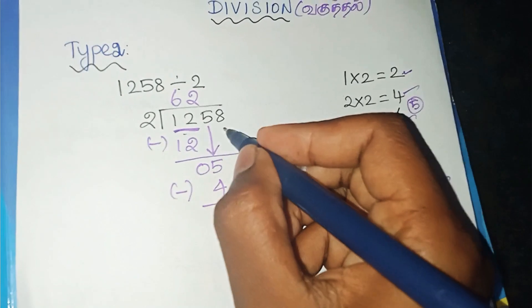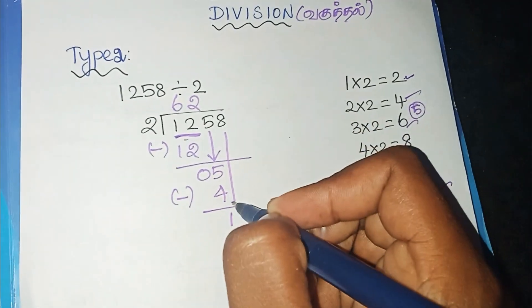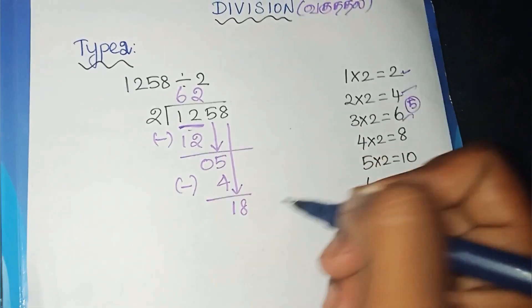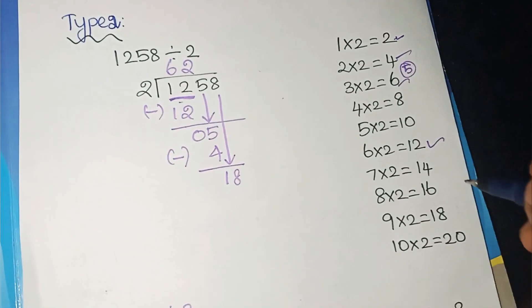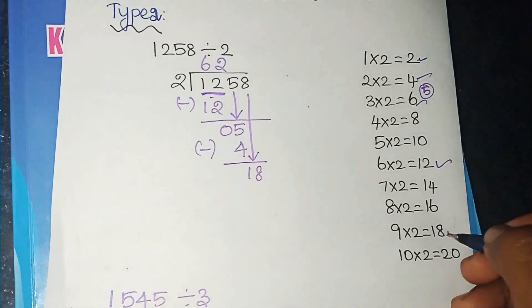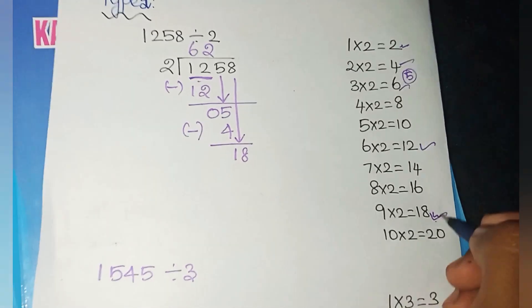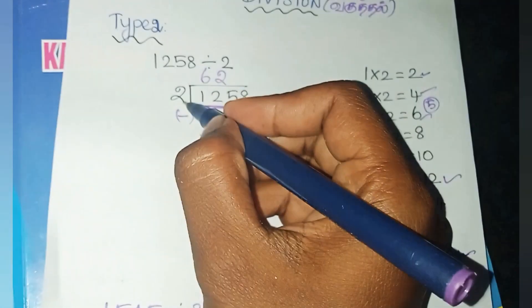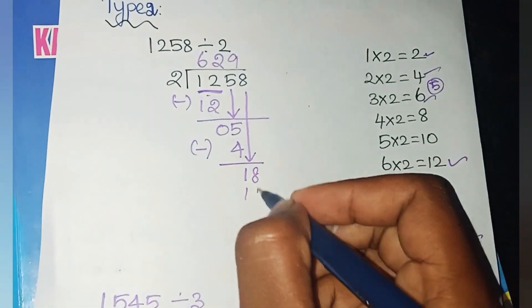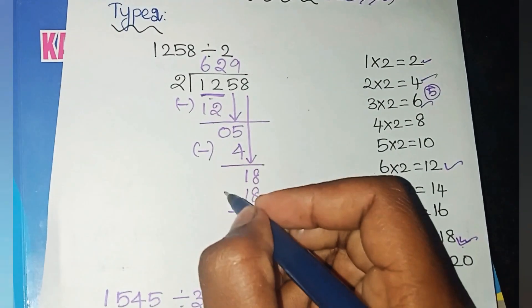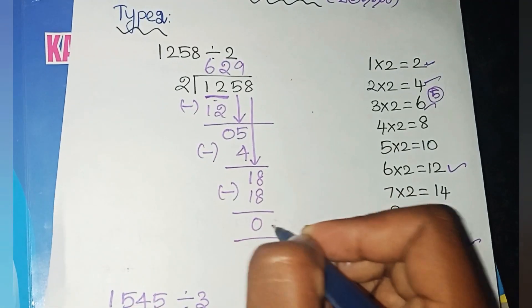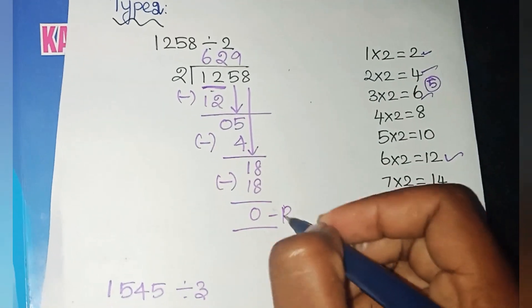Next, you have to bring down the last digit, which is 8. So we have 18. You have to check the 2nd table. 9 into 2 is 18 — we get 18 directly. So, how many 2's are 18? 9 into 2 is 18. Next step is subtraction: 18 minus 18 is 0. 0 is the remainder.